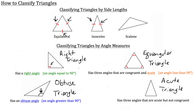Alright, that is how you classify triangles. Now any particular triangle can be a combination of the side length classification and angle classification. For example, you could have an isosceles right triangle, an obtuse scalene triangle, or even an acute scalene triangle. They're all possibilities, so when you're naming triangles in the future, remember to name them by their angle measure and then their side lengths.